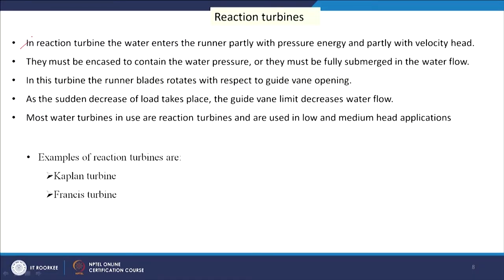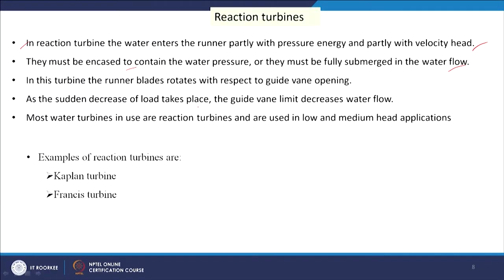In a reaction turbine, unlike an impulse turbine where water passes through nozzles and hits the blades, water enters the runner partly with pressure energy and partly with velocity head. The runner must be encased to contain the water pressure or fully submerged. Runner blades rotate with respect to guide vanes which control flow and hence blade speed. When load suddenly decreases, the guide vanes reduce water flow. Most water turbines in use are reaction turbines, used in low and medium head applications.